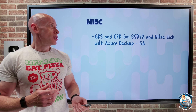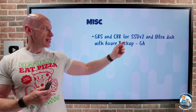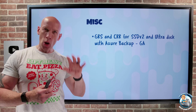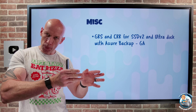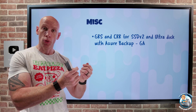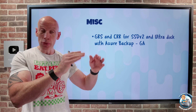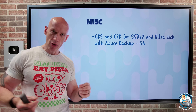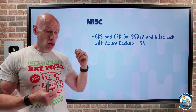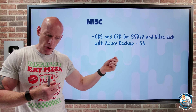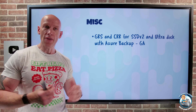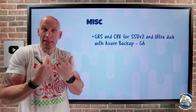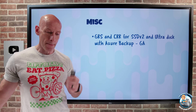For Azure Backup, virtual machines with Premium SSD V2 and Ultra Disk — both of which let you have separate IOPS and throughput from capacity, and allow dynamic changes to IOPS and throughput while the disk is in use — can now leverage GRS for backup, so it's replicated to the paired region. You can also do a cross-region recovery to the paired region of that virtual machine. So in a DR situation you can restore it into the paired region, or even just to audit and test whether your restore process works.